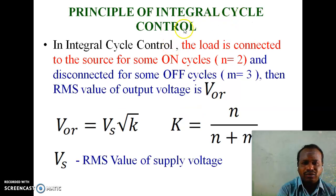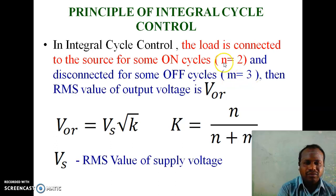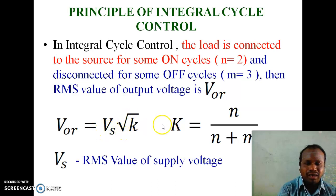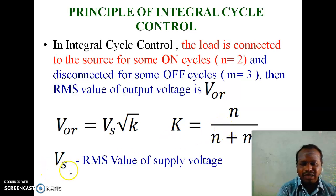Principle of integral cycle control: in integral cycle control, the load is connected to the source for some on-cycles, say N equal to 2, and disconnected for some off-cycles, say M equal to 3. That is, for 2 cycles it is connected and for 3 cycles it is disconnected. The RMS value of the output voltage V0R is given by Vs multiplied by the square root of K, where K equals N divided by N plus M, Vs is the RMS value of the supply voltage, and V0R is the RMS value of the output voltage.